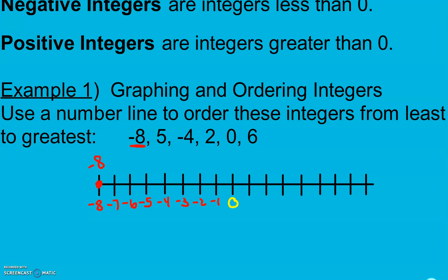5 is positive, so we go to the right 5 places. Negative 4 is 4 to the left of 0. 2 is positive, so it's 2 units to the right. 0 is just 0. And 6 is positive, so we go 6 units to the right.